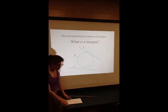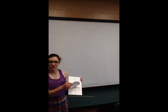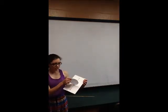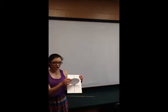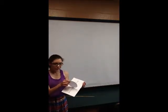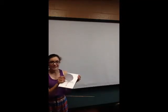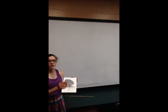Now what about this example here? Could this line be tangent to the circle? It hits the circle at one point, and fits our definition, therefore it must be a tangent. But we know from our common knowledge of geometry that this is not tangent to the circle. So we have to alter our definition so it excludes this figure.